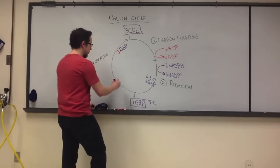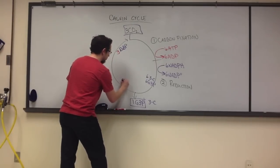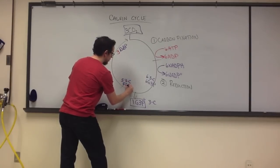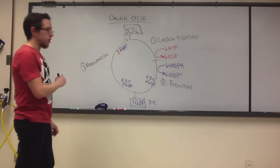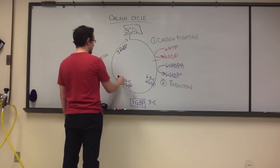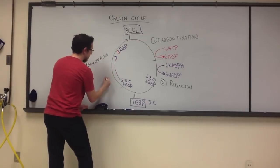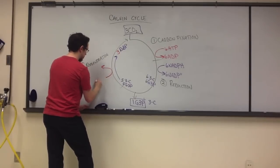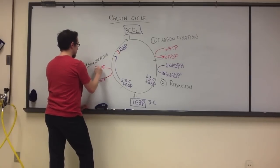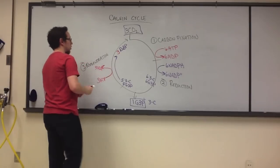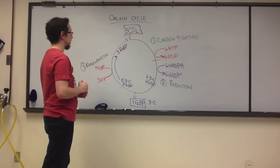At that point in time, we then have five molecules that are three-carbon of G3P left. And those molecules, giving us a total of 15 carbons, eventually, with the addition of energy, are ultimately regenerated to our three molecules of ribulose-biphosphate.